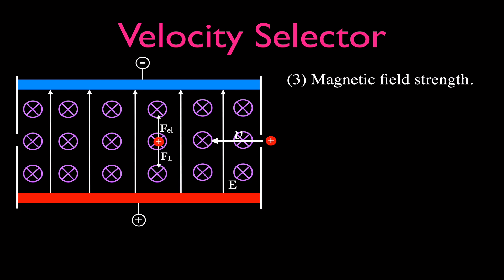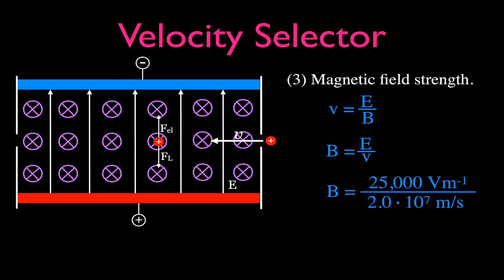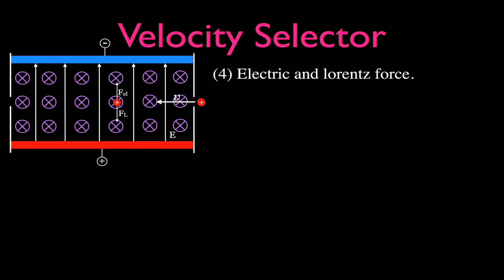Number three: calculating the magnetic field strength. Since the proton travels straight through, we know that velocity equals electric field strength divided by magnetic field strength (v = E/B). Rearranging gives B = E/v. The electric field strength is 25,000 volts per meter and the velocity is 2.0 times 10 to the 7 meters per second, giving a magnetic field strength of 1.2 times 10 to the minus 3 teslas.